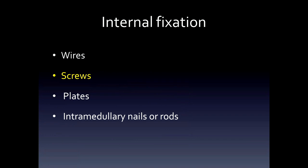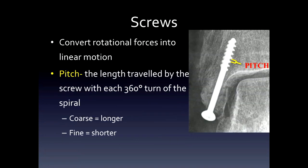After wires, we're going to talk about screws. Screws are described in several ways, but one of the most important is the pitch, which relates to the distance between the screw threads. This indicates the length traveled by the screw with each 360-degree turn. Smaller, shorter pitch is called fine pitch, and longer, more distant threads are called coarse pitch. The more distance there is between the threads, the more likely it is to grab on cancellous bone.